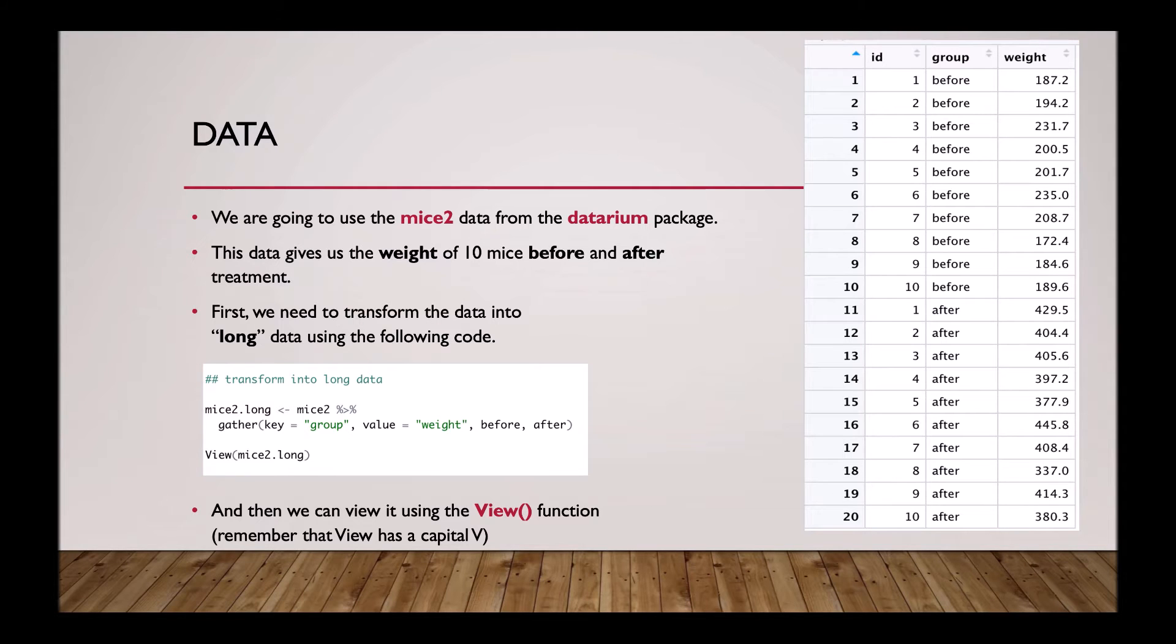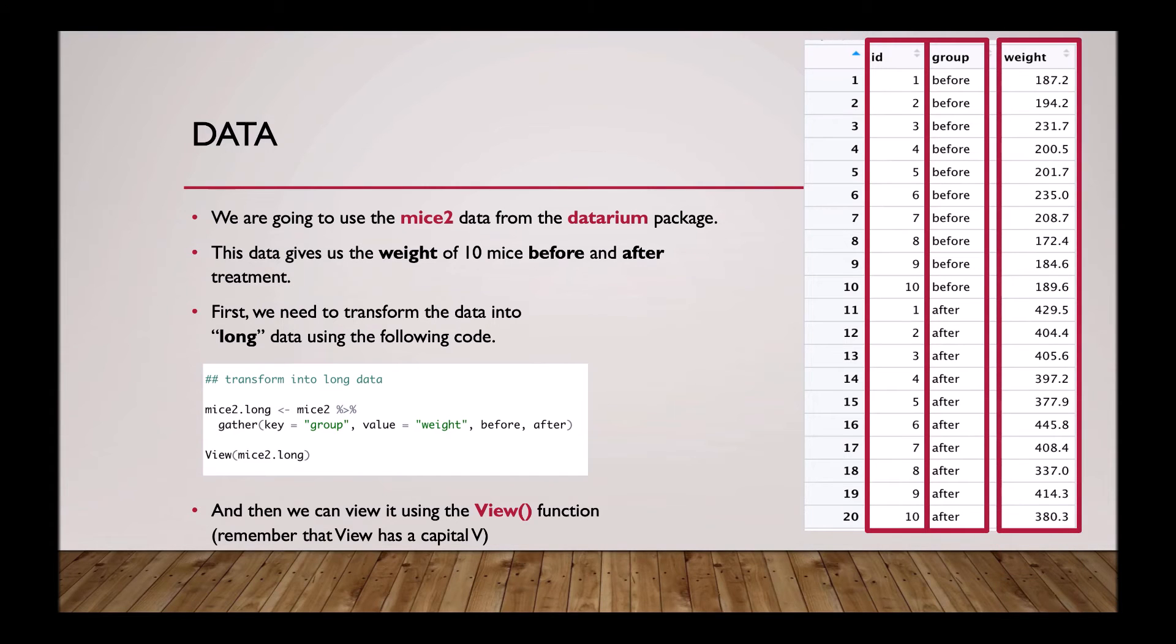Here is our data. It's now in long format where all the groups are in one column and the ID is repeated. To break it down, firstly we have the ID and this is our mice. The numbers are repeated because it is within subject's design. Then we have our group, which is before and after treatment, and finally we have the weight.